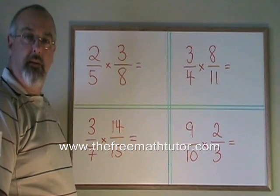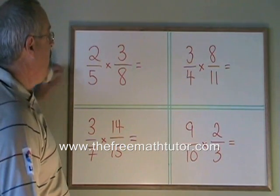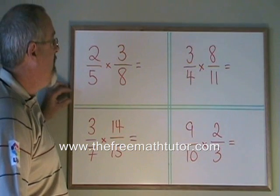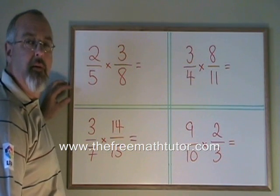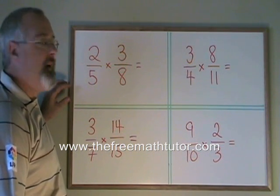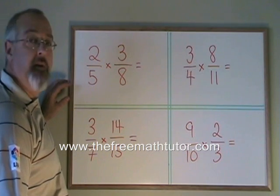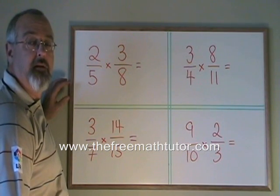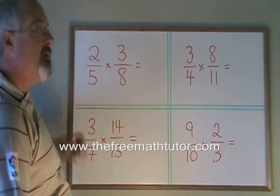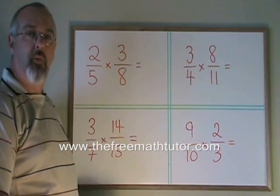Here are some more examples of canceling. In this case, we don't have the same number on the top and the bottom to cancel. Instead, we have two different numbers that share a common factor. So instead of having a 2 on the top and a 2 on the bottom, canceling them both into 1s, this time I have a 2 on the top and an 8 on the bottom.